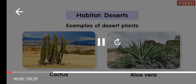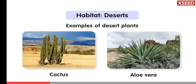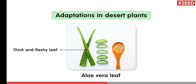Desert plants have adaptations to reduce water loss and store water. Leaves of the cactus are reduced to spines to reduce water loss through transpiration. The thick and fleshy leaves of the aloe vera store water.